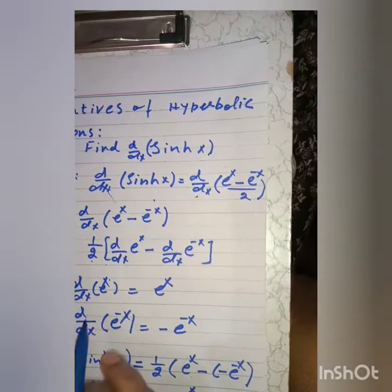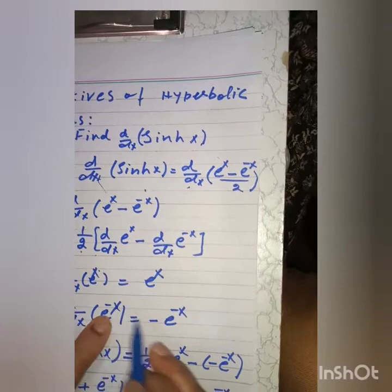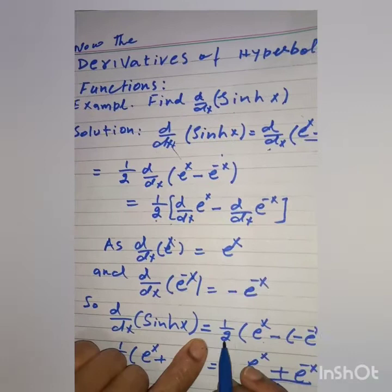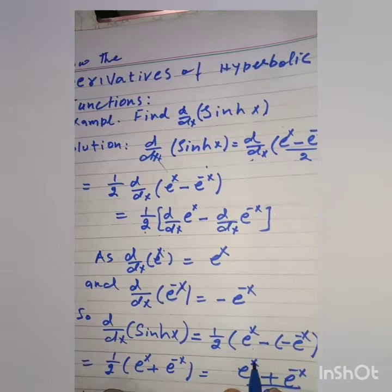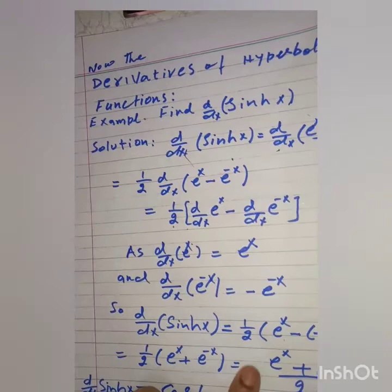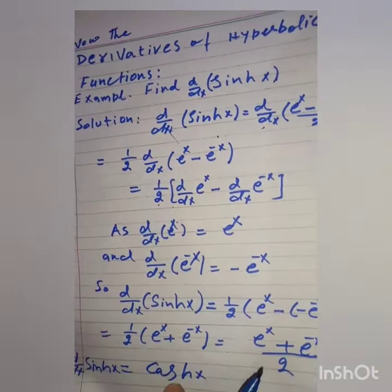So, d by dx of e to the power x is equal to e to the power x, and d by dx of e to the power minus x is minus e to the power minus x. So d by dx of sinh x will be equal to 1 by 2 into e to the power x minus minus e to the power minus x, giving us e to the power x plus e to the power minus x dividing by 2, which is equal to cosh x. So the derivative of sinh x is equal to cosh x.